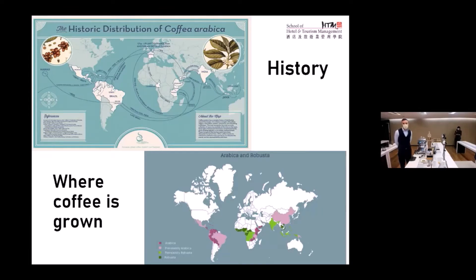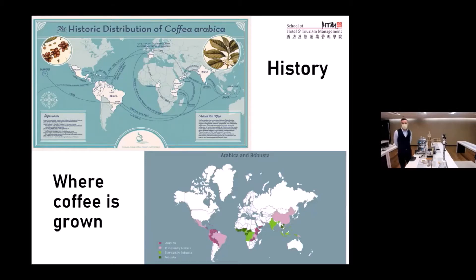Coffee then spread across the water to Yemen, which was the first place they said cultivated coffee. Ethiopia used to grow it wild, underneath some different trees, and people used to pick it sporadically. From there it spread up through the Middle East, eventually into Europe via the Ottoman Empire, and also across into Asia to what would now be known as Indonesia, and eventually over to Central and South America too.